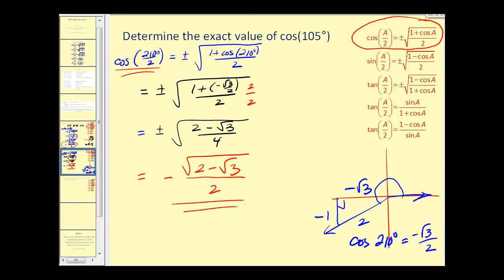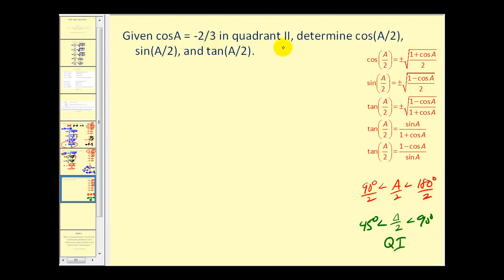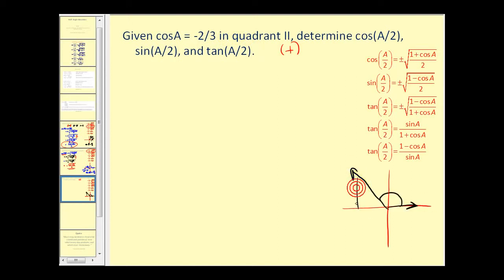We have one more question. Here we're given cosine a equals negative two-thirds in the second quadrant. We want to determine cosine of a over two, sine of a over two, and tangent of a over two. First, angle a is in the second quadrant, which means it's between 90 degrees and 180 degrees. So a over two would be between 45 degrees and 90 degrees, meaning it's in quadrant one. All of these function values will be positive. Let's sketch this angle in standard position — here's our reference triangle — and using the Pythagorean theorem, we can determine the third side equals the square root of five.